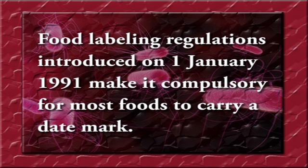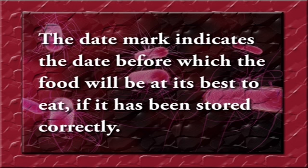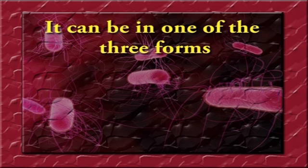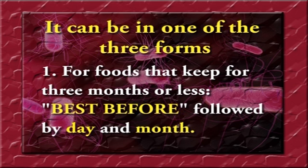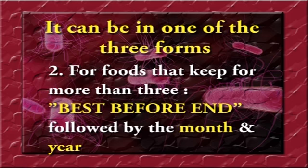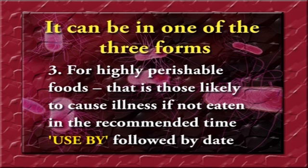Food labeling regulations introduced on 1st January 1991 make it compulsory for most foods to carry a date mark. The date mark indicates the date before which the food will be at its best to eat if stored correctly. It can be in one of three forms: for foods that keep for three months or less, 'best before' followed by day and month; for foods that keep for more than three months, 'best before end' followed by the month and year; and for highly perishable foods likely to cause illness if not eaten in the recommended time, 'use by' followed by the date.